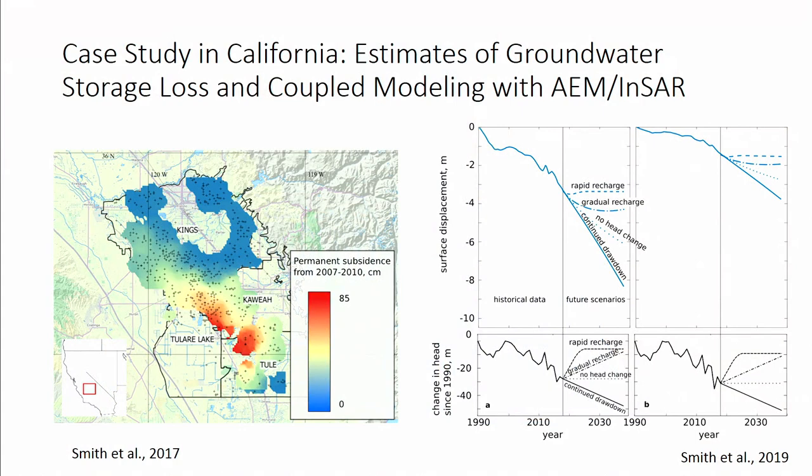You can see the results of that model on the right, showing it matches historical subsidence pretty nicely. But we're also able to use it to forecast future scenarios — whether we're able to recharge rapidly or if we have continued drawdown, what sort of scenarios are we looking at. This is a good approach that has potential for going to other areas with very limited groundwater data, because you're able to get a good sense of the geology through AEM data and InSAR is a good proxy for hydrologic changes.